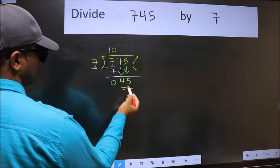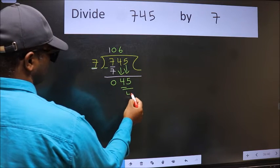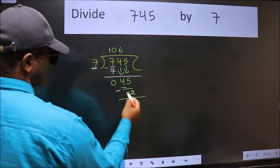Now we have 45. A number close to 45 in the 7 table is 7 times 6 equals 42. Now we subtract and get 3.